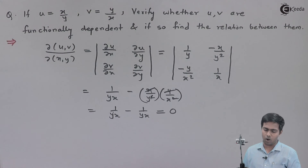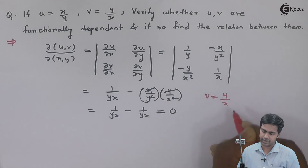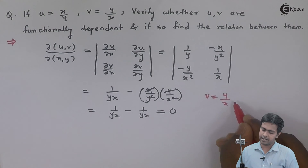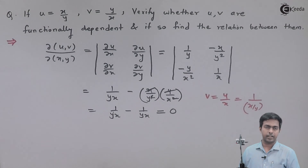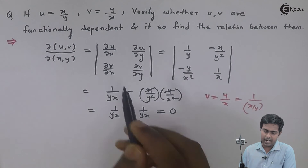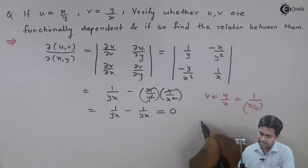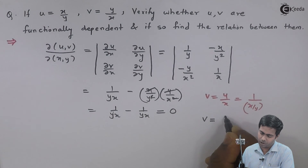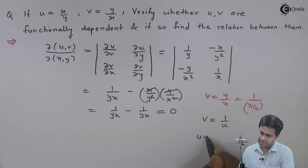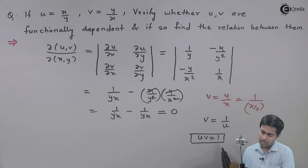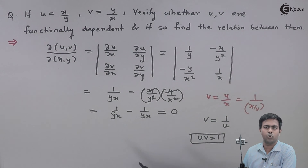Here, v is given as y/x. If we write this as 1 divided by (x/y), we can see that x/y is nothing but u. So it clearly indicates that v = 1/u, or equivalently, uv = 1. This is the functional dependence between u and v.